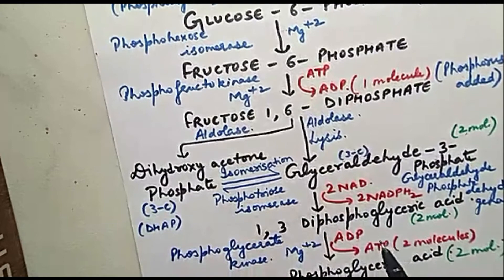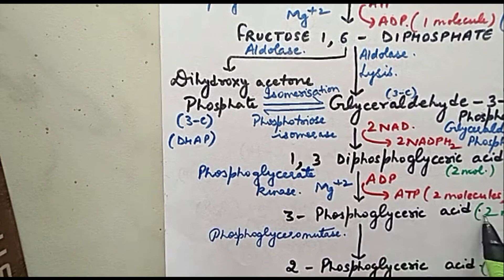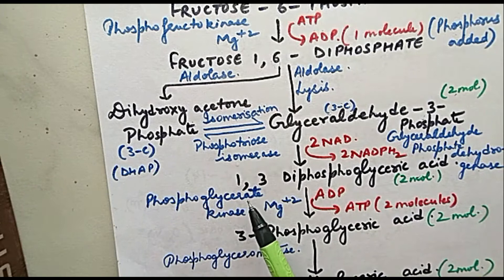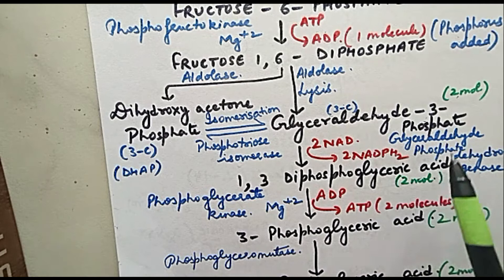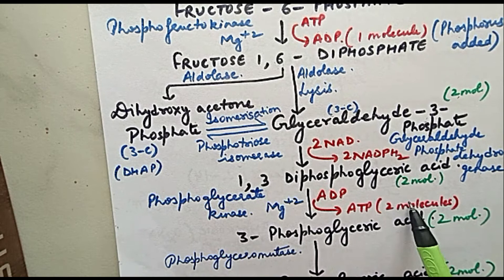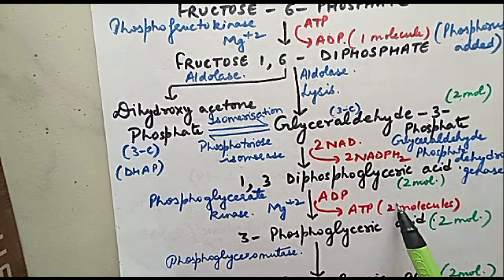Then 1,3-diphosphoglyceric acid will get converted into 3-phosphoglyceric acid, 2 molecules. Enzyme involved is phosphoglycerate kinase. ATP is used - 2 molecules of ATP will be formed now. First we had used ATP, now ADP will become ATP. Since there are 2 molecules, there will be formation of 2 ATP molecules.